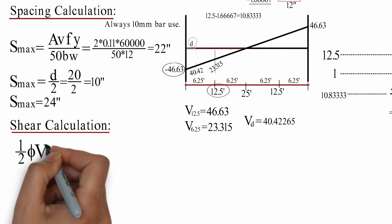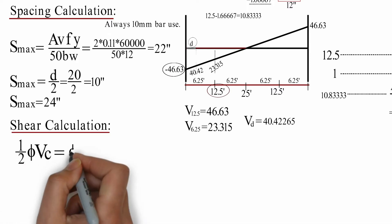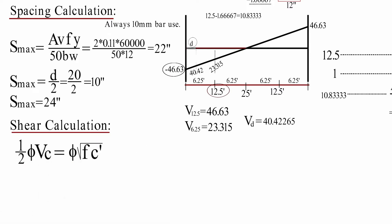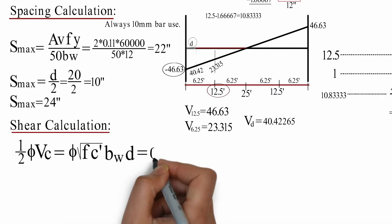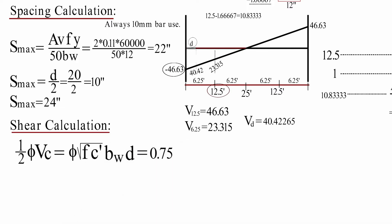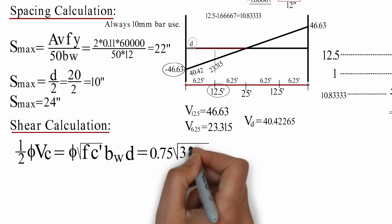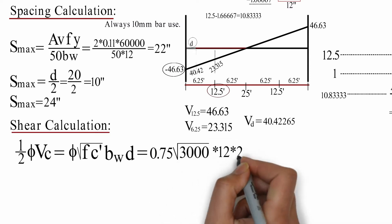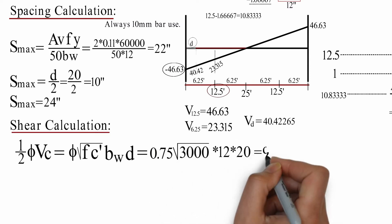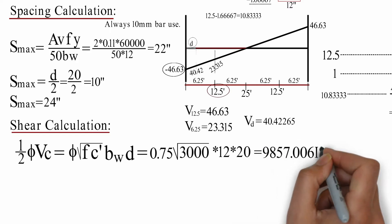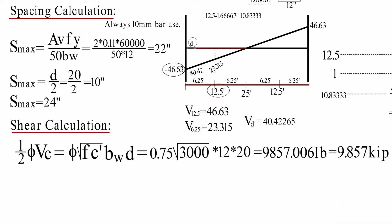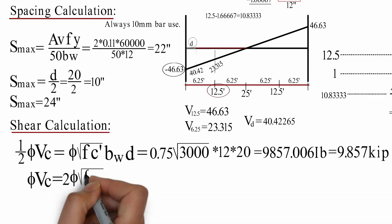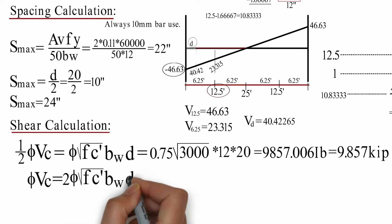Phi times V_c equals phi times root over f-prime-c times b_w times d. Here phi is 0.75. Result: 9.857 kips — that is phi*V_c. V_c.